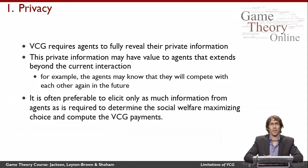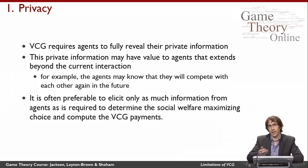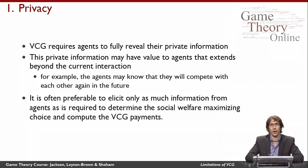The first limitation is that VCG requires that the agents tell the mechanism everything about their private information. This is fine if we really believe our model, that agents have utility only for the choice the mechanism makes and the payments imposed. But in some settings, agents might interact together repeatedly, and publicizing their private information might affect their ability to compete in future interactions. So agents might prefer a mechanism in which only as much information is disclosed as is required to compute the social welfare maximizing choice and the VCG payments. This is often possible, and VCG requires revealing more than that, so in such cases VCG wouldn't be a good choice of mechanism.